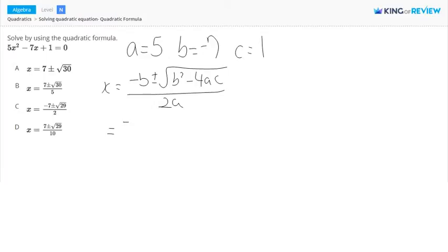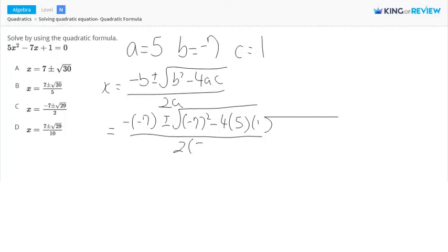And our b value is negative 7 plus or minus square root negative 7 squared minus 4 times a, which is 5, times c, which is 1, over 2 times a, which is 2 times 5.